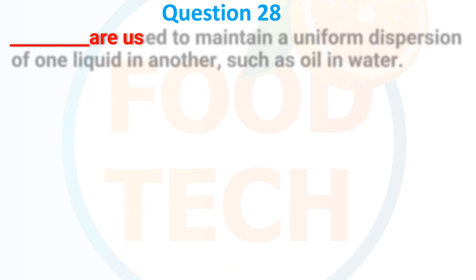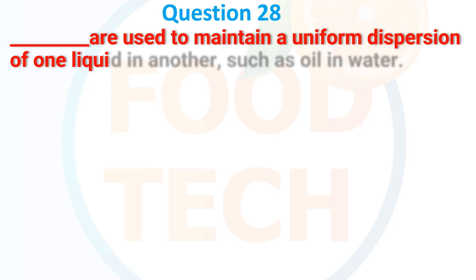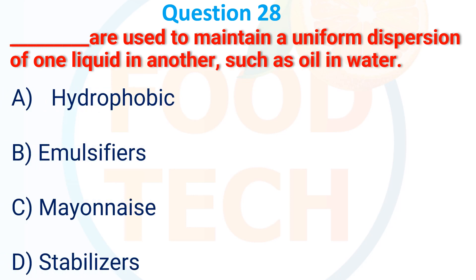Question 28. These are used to maintain a uniform dispersion of one liquid in another, such as oil in water. A. Hydrophobic. B. Emulsifier. C. Magnus. D. Stabilizer. The correct answer is B: emulsifier.